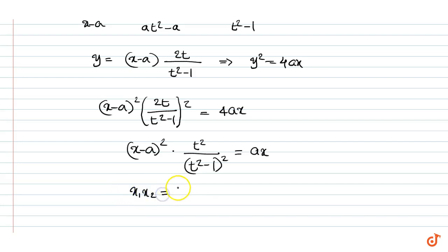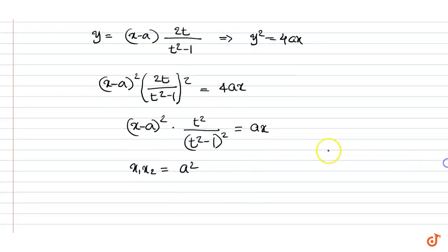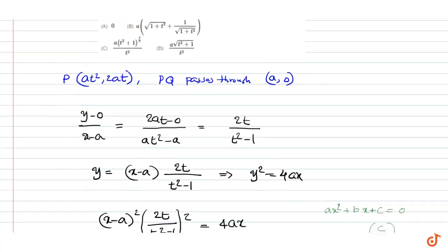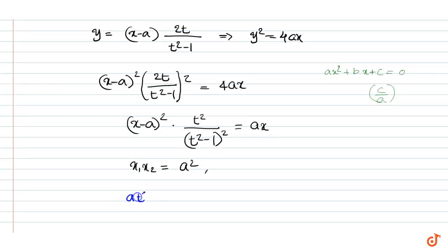For a quadratic ax² + bx + c = 0, the product of roots is c/a. Applying that formula here, we get x₁ · x₂ = a². Since x₁ = at², we can write at² · x₂ = a², giving x₂ = a / t².